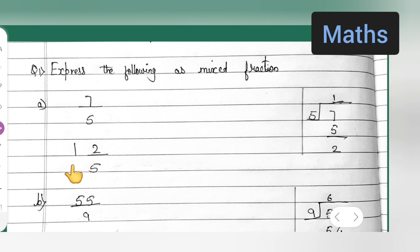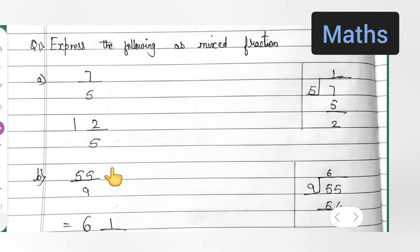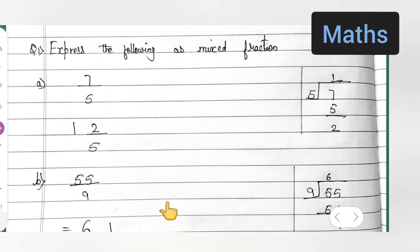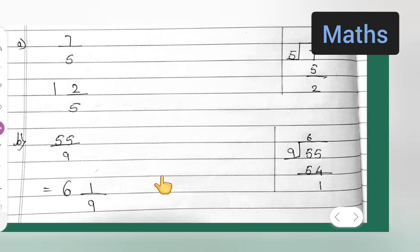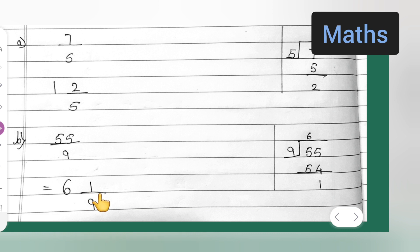Next, the second one. How we will have to do is 55 upon 9. Divide it. So 9 sixes are 54, 1 will remain. So what we are going to get is the remainder will be coming down always.